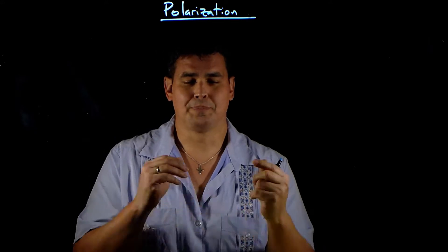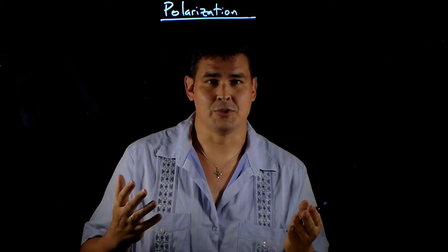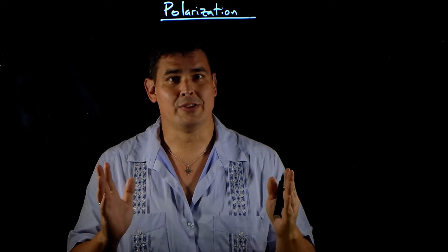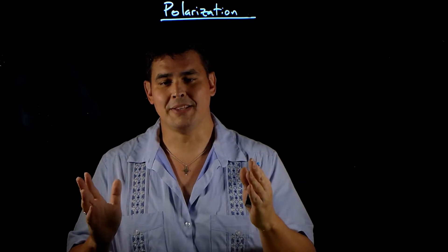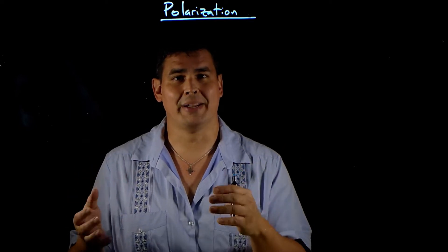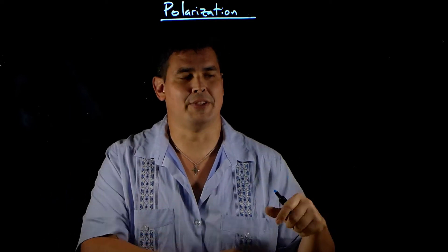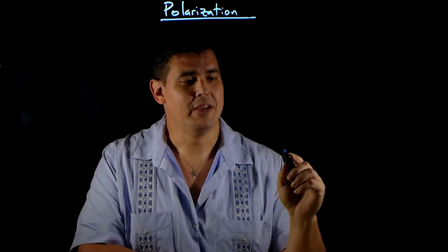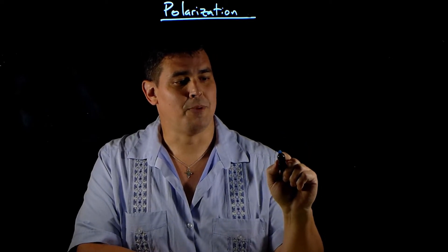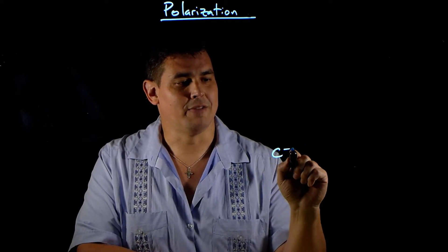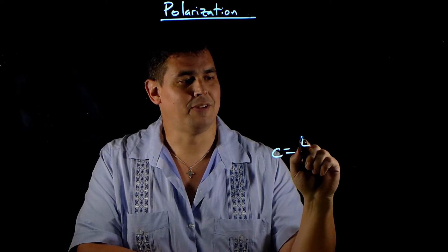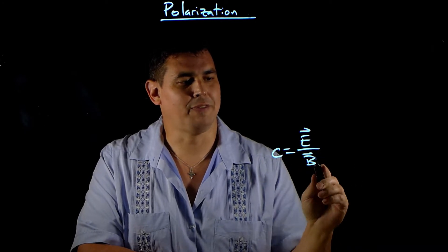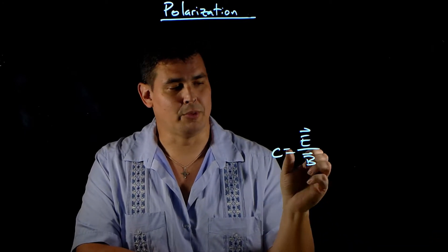So what's a polarizer and how does a polarizer work? A polarizer basically takes electromagnetic waves and filters them by the direction of the electric field. We know that we can find the speed of light from the magnitude of the electric field divided by the magnitude of the magnetic field.